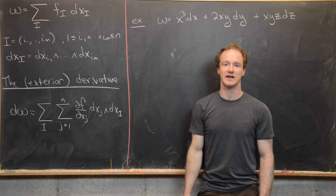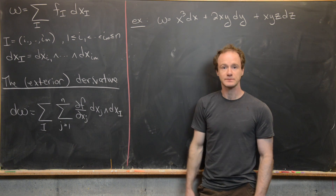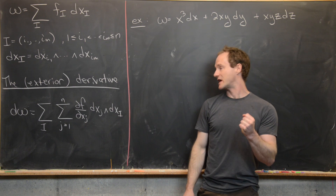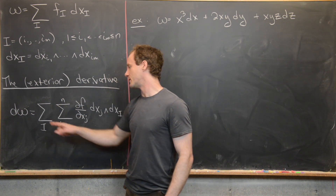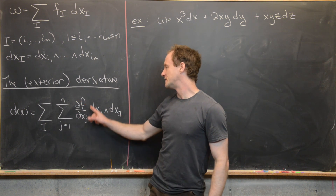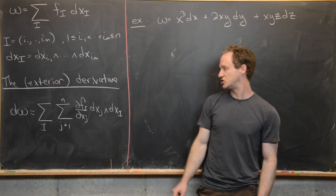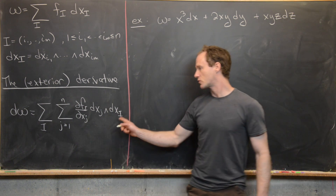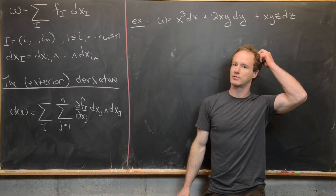The elementary M-form dx_i is given by dx_{i1} wedge all the way up to dx_{im}. The exterior derivative of this differential M-form gives a differential M+1 form, defined as d(omega) equals the sum over all multi-indices i and j from 1 to n of the partial of f_i with respect to x_j, times dx_j wedged into the elementary M-form dx_i.